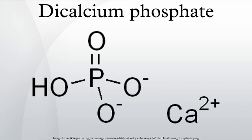It is usually found as the dihydrate, with the chemical formula CaHPO₄·2H₂O, but it can be thermally converted to the anhydrous form, which has been referred to by the abbreviation DCPA. It is practically insoluble in water, with a solubility of 0.02 g per 100 milliliters at 25 degrees Celsius. It contains about 29.5% calcium in its anhydrous form.